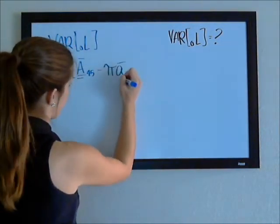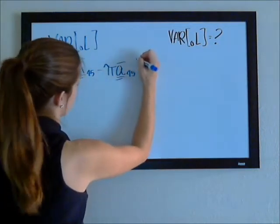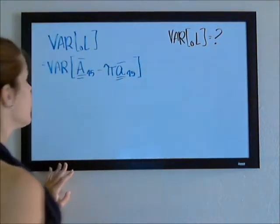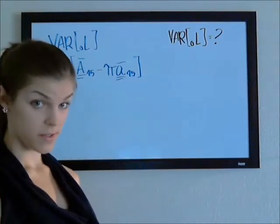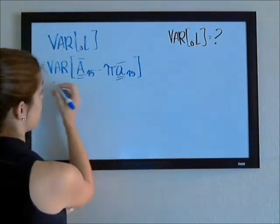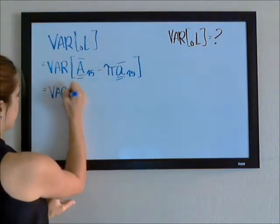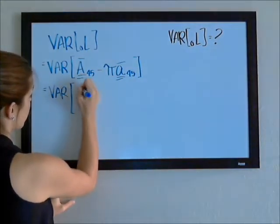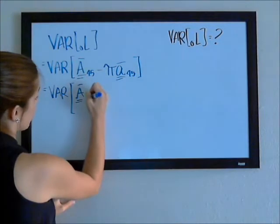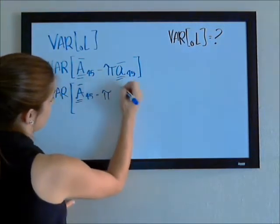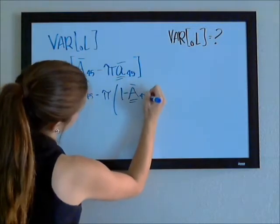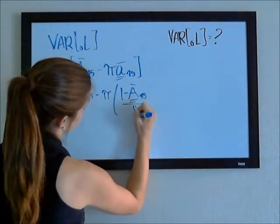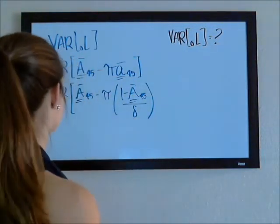the amount we pay out, less the amount we bring in. I'm going to rewrite the annuity in terms of insurances so that we have less variables to work with here. This is the variance of our insurance plus the premium times our annuity, which is 1 minus the insurance over delta, because it's continuous.